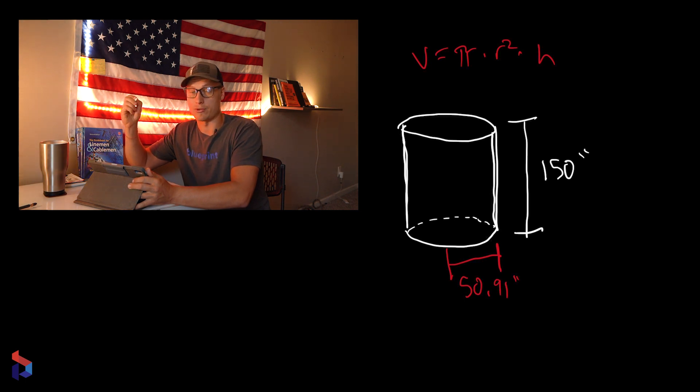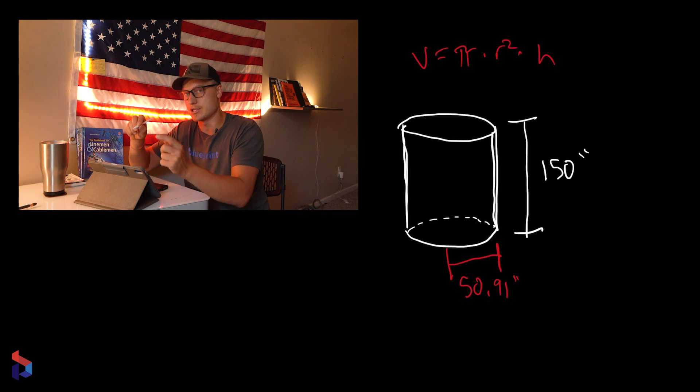If you're given the volume, you already know pi, and you're given either the radius or the height, then you can interchange the equation as needed. The customer should give you their dimensions. If they tell you they want a 5,000 gallon tank that's 200 inches tall, you have two values — plug them in and rearrange to find the radius. Once you have the radius, you can find the diameter by multiplying the radius times two.